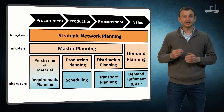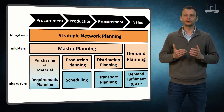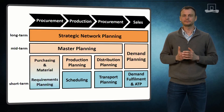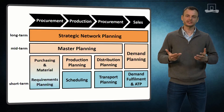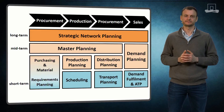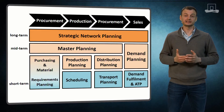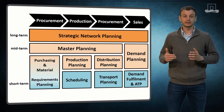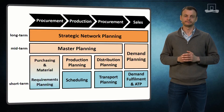The supply chain matrix classifies important supply chain planning activities based on aggregation level and planning intervals. Planning intervals can range from aggregated long term to detailed short term.